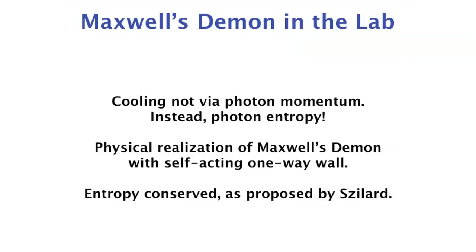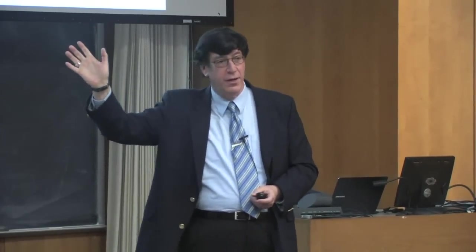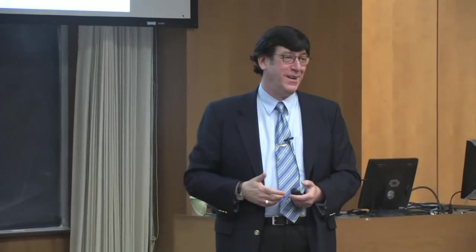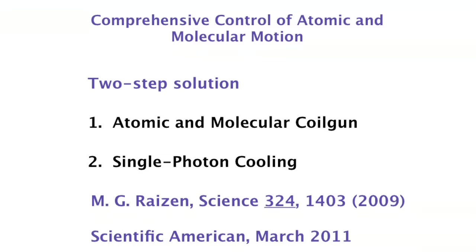This realizes Maxwell's demon exactly as he predicted — a self-acting one-way wall. We analyzed the entropy with a colleague, Gonzalo Muga in Spain. When an atom goes through this one-way wall it takes a photon from a laser beam — a source of nearly zero-entropy photons — and scatters it in a random direction, increasing the photon's entropy. That entropy increase exactly accounts for the entropy decrease of our gas. There's no mystery: Maxwell's demon is just a laser beam.